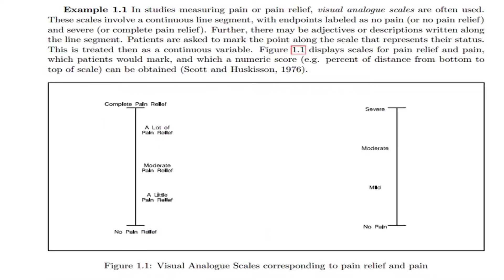Here is an example of an ordinal variable. In studies measuring pain or pain relief, visual analog scales are often used. These scales involve a continuous line segment with endpoints labeled as 'no pain' or 'no pain relief' and 'severe pain' or 'complete pain relief.' Adjectives or descriptions may be written along the line. Patients mark the point that represents their status, and this is then treated as a continuous variable. Trauma patients can assess their pain in a leg after using two methods of operations, allowing doctors to choose the more effective method.